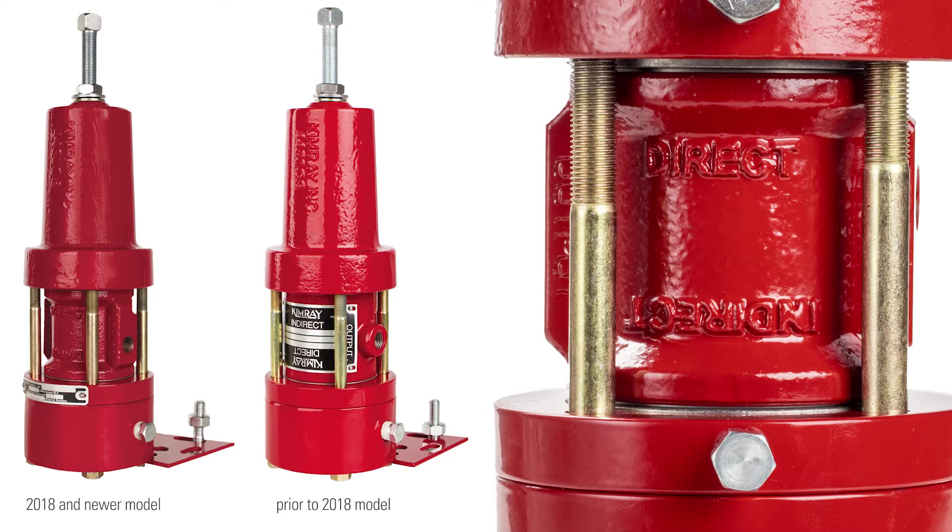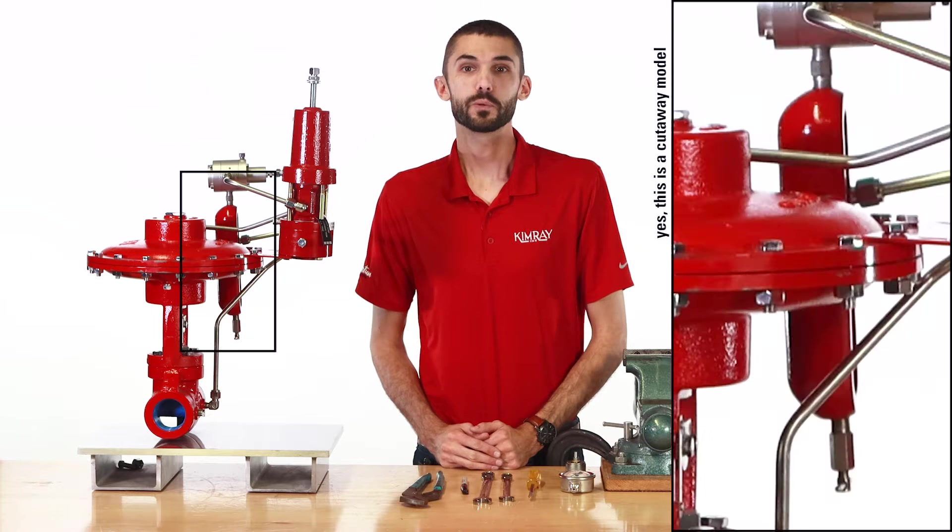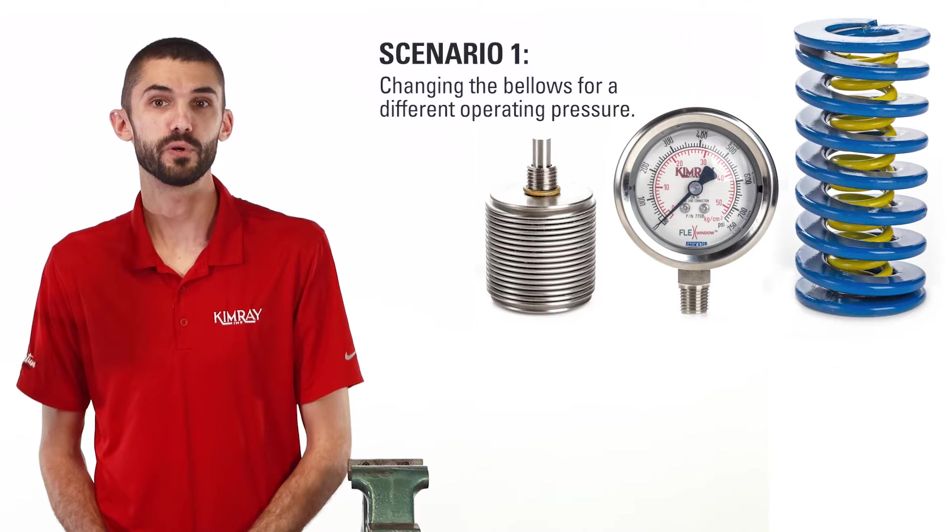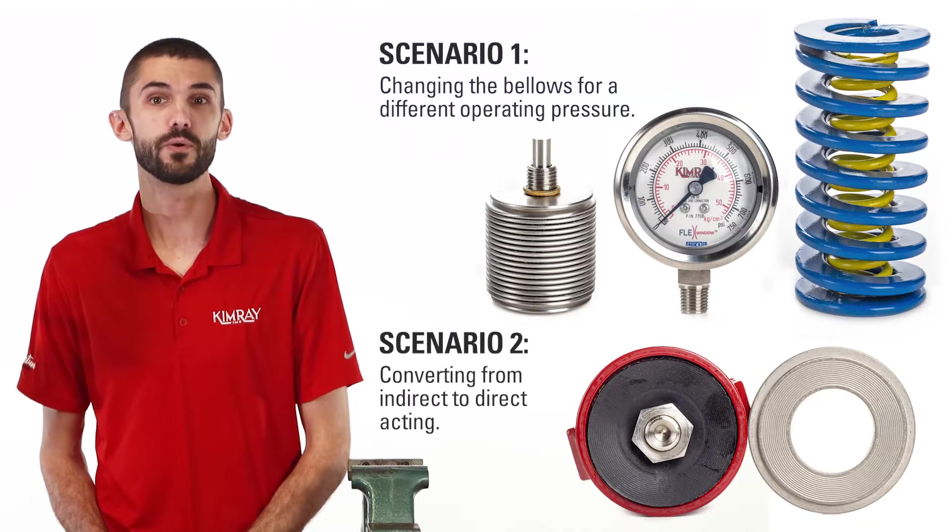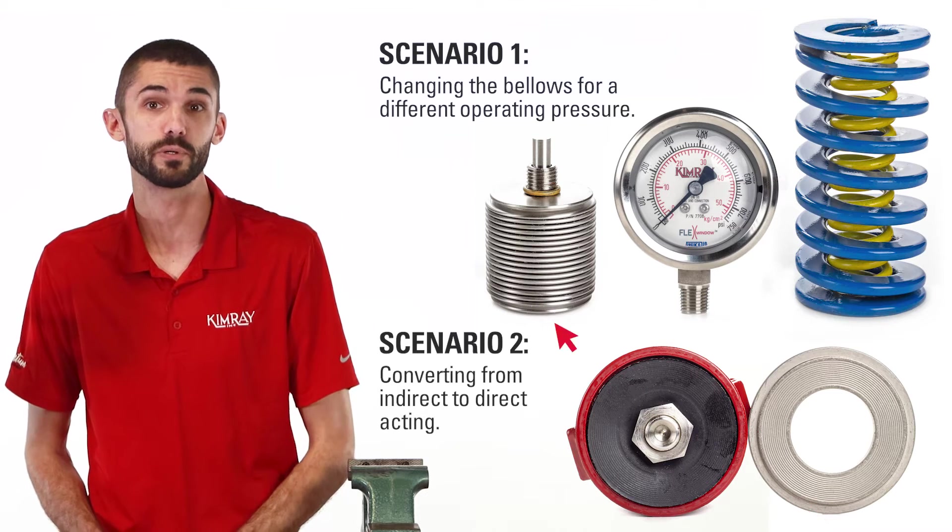Part of its value is that it can act in either direct or indirect mode with a simple modification. In this video we're going to cover two scenarios: changing the bellows for a different operating pressure and converting from indirect to direct acting for repurposing from a back pressure to a pressure reducing operation.